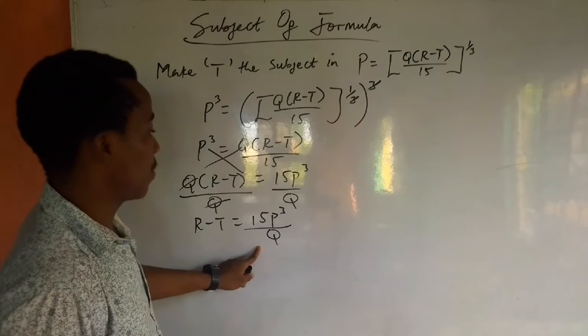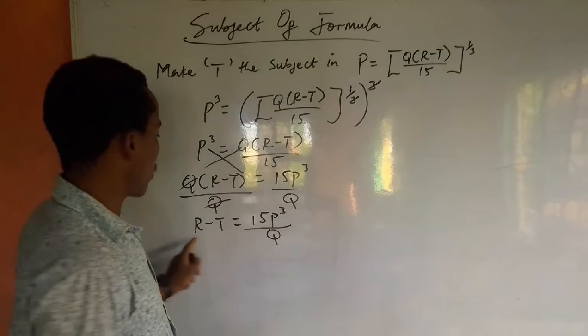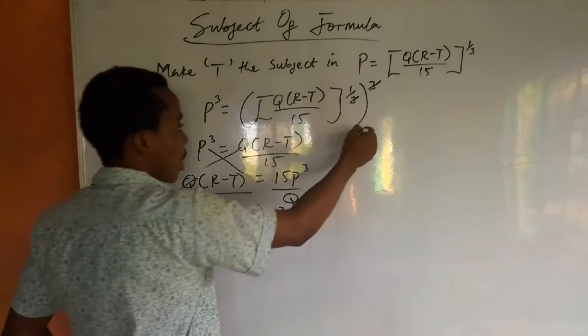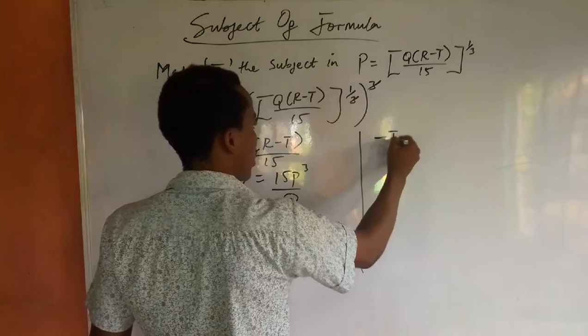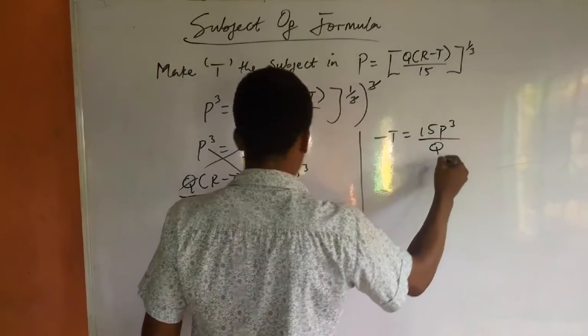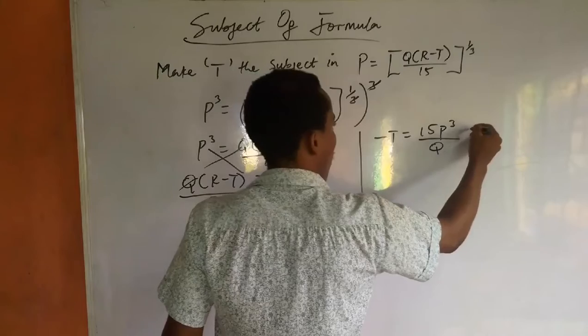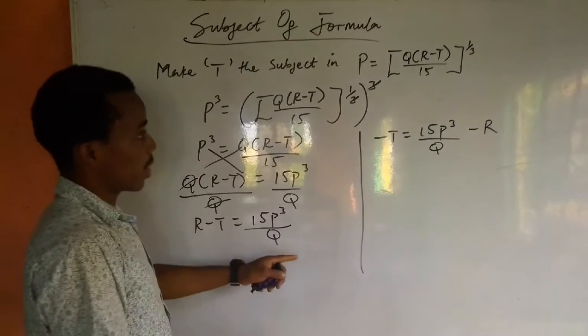This is what we have now. But the question says we should make t the subject, so we need to move this R. As it's positive here, it becomes negative here. Now we have -t = 15P³/Q - R.